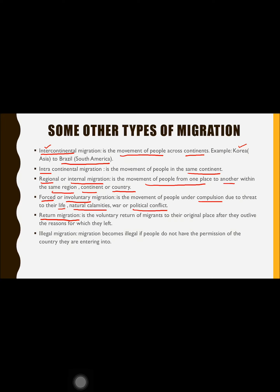Return migration is the voluntary return of migrants to their original place after they have outlived the reasons for which they left. For example, people from India who migrated to America to work as doctors or engineers, and who now feel satisfied with what they have achieved, return home. Such migration is known as return migration.